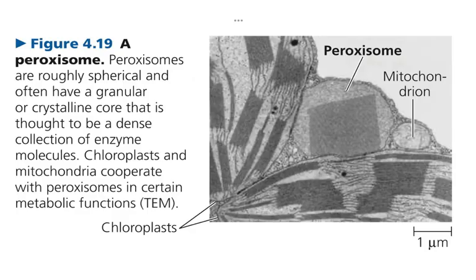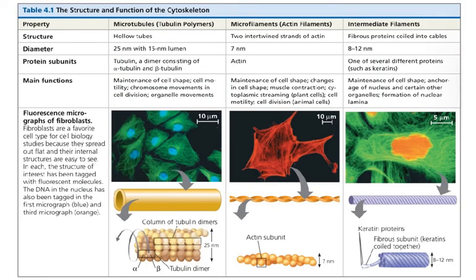There are also miscellaneous organelles that don't fit into the endomembrane system or endosymbiont theory. The peroxisome, found in plants and animals, is an organelle that oxidizes things — electrons go to oxygen, producing hydrogen peroxide, hence the name. It helps with oxidative processes, but the peroxisome is usually not the answer on tests, so don't pick it unless it's process of elimination.